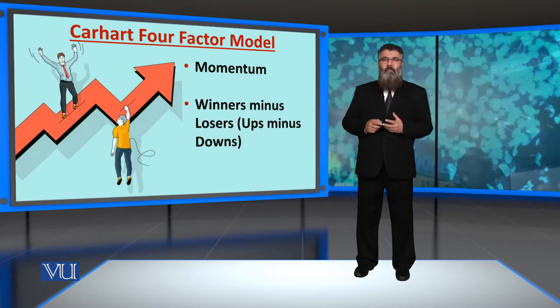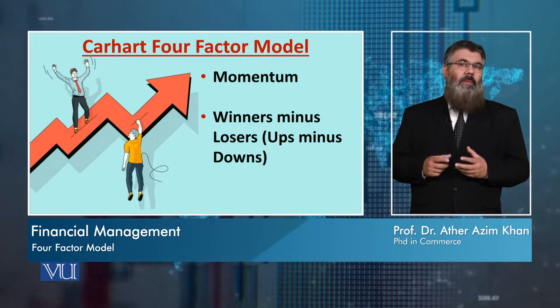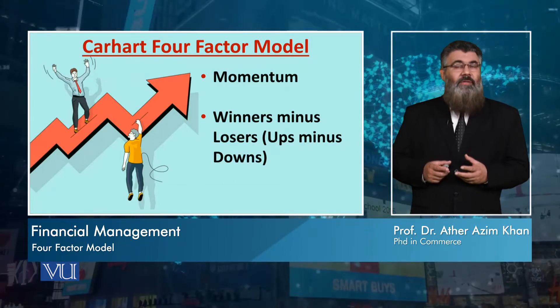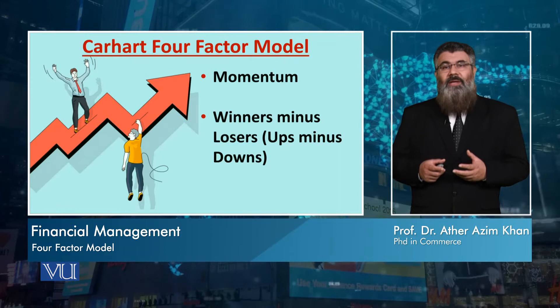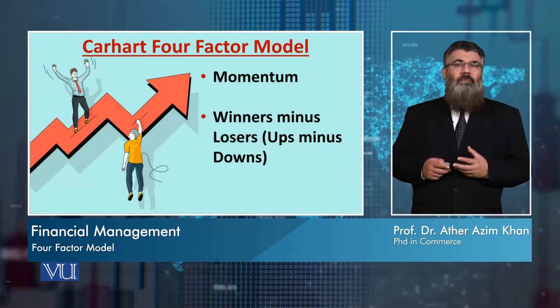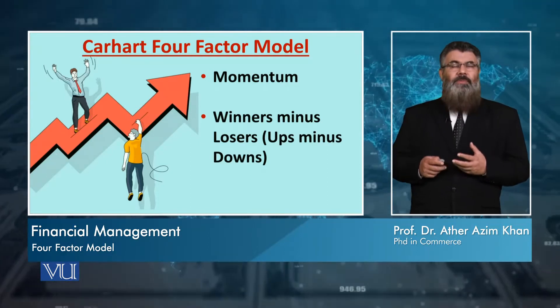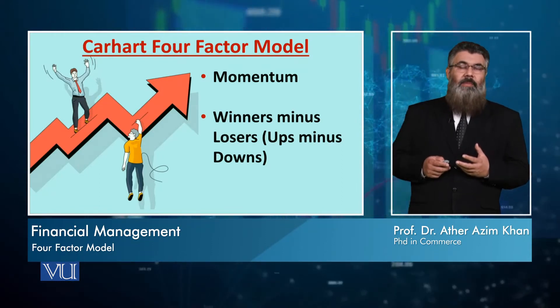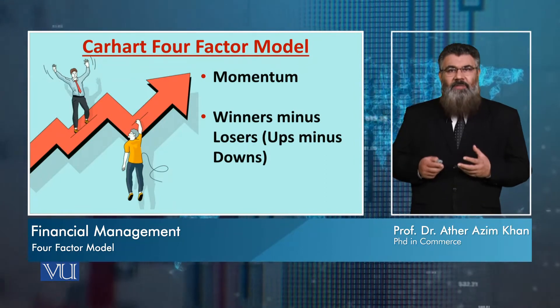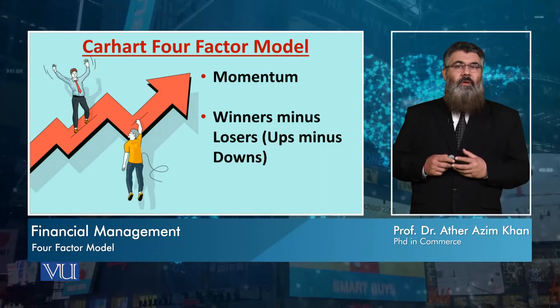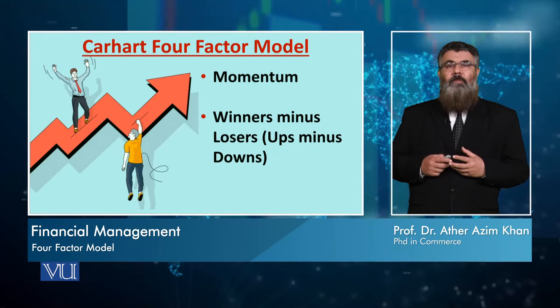What do we mean by momentum? We consider stocks whose prices are going up — we call them winners. Winners are simply the stocks which are gaining in the stock market. Against those winners, there are losers — the stocks whose prices are going down. We construct the momentum variable by taking the difference between winners and losers, also referred to as ups minus downs. Carhart gave this model, and it was found that including this fourth factor of momentum provides a better explanation of the return on stocks.